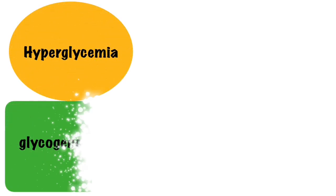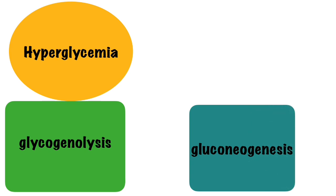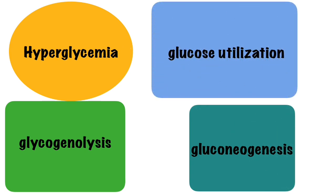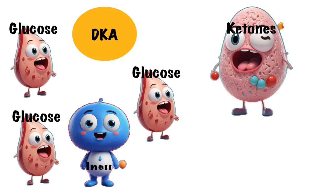The hyperglycemia in DKA is the result of three events: one, increased gluconeogenesis; two, increased glycogenolysis; and three, decreased glucose utilization. In DKA, there is also increased lipolysis and ketogenesis.